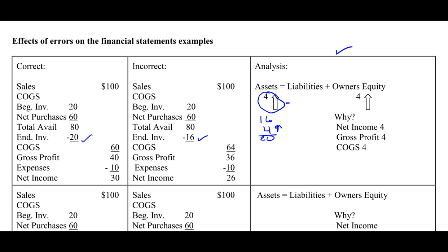Now, given that I must be in balance, something else must be understated by 4 on the other side of the equation. I know in this example that liabilities are okay, so the difference has to be in owner's equity. Why? Well, if assets are understated, then something in owner's equity was understated.